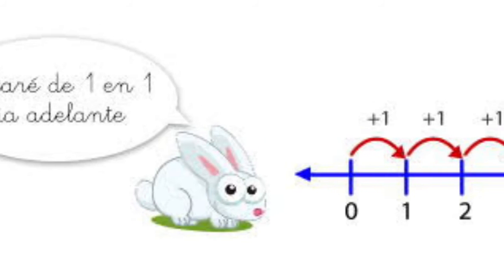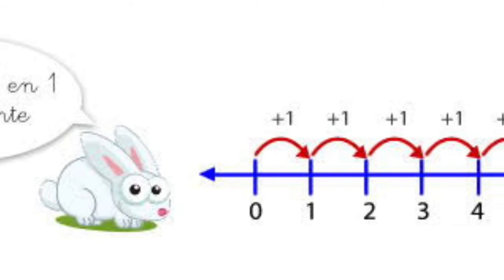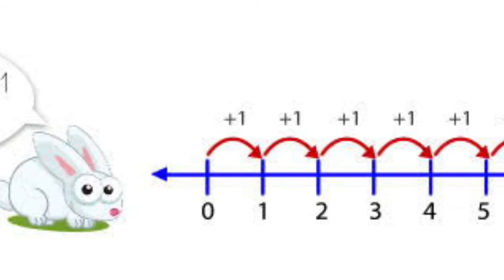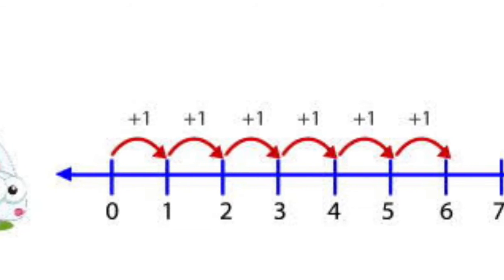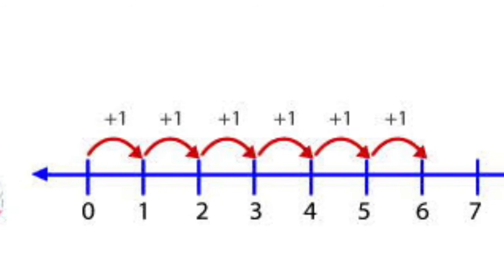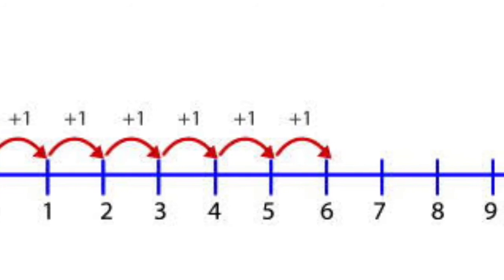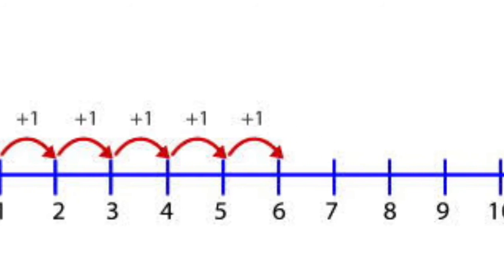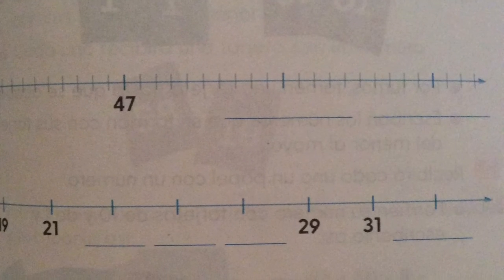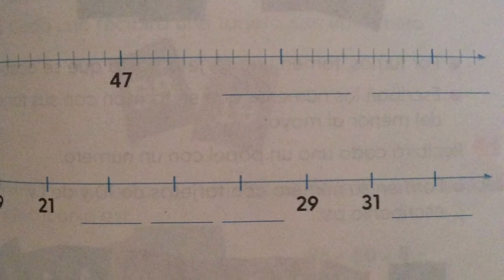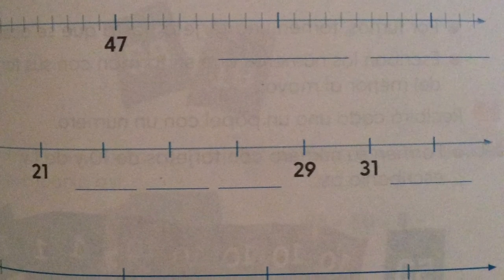Ahora continuaremos con la página 149. En ella trabajaremos la recta numérica. El ejercicio nos dice: para contar, Pedro utiliza una recta numérica. A veces cuenta de 1 en 1, a veces de 10 en 10 y a veces de 2 en 2. ¿Cómo contó en cada recta? Te invito a terminar esta actividad de dicha página.